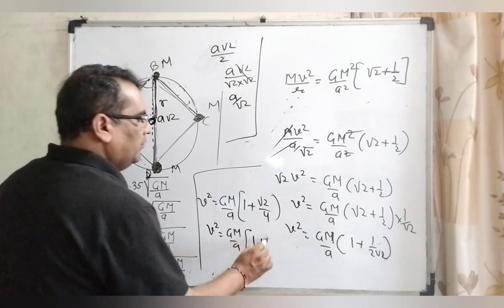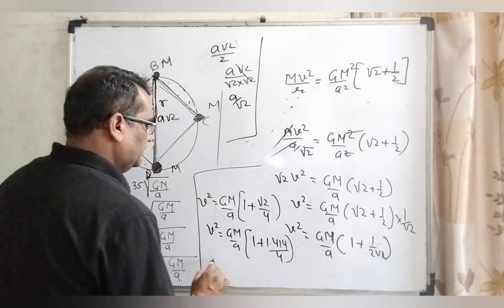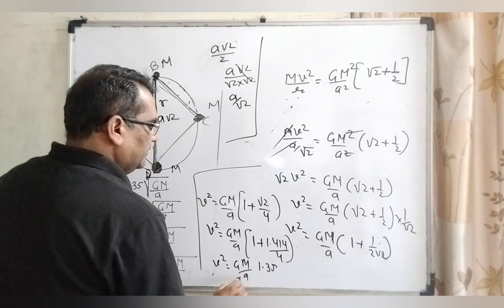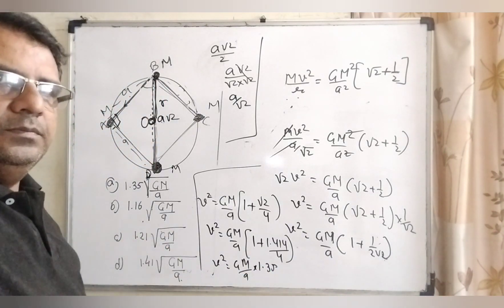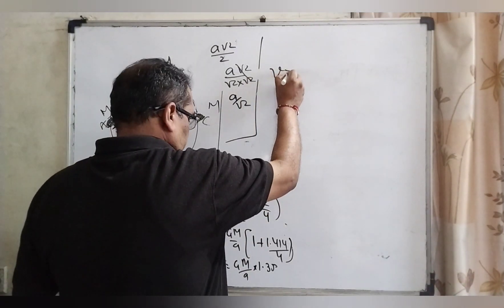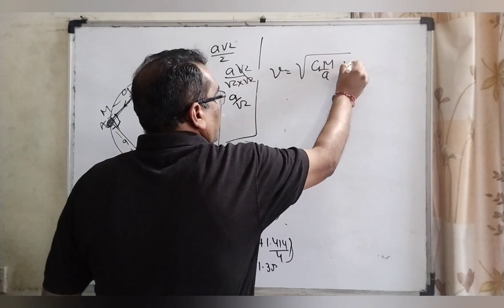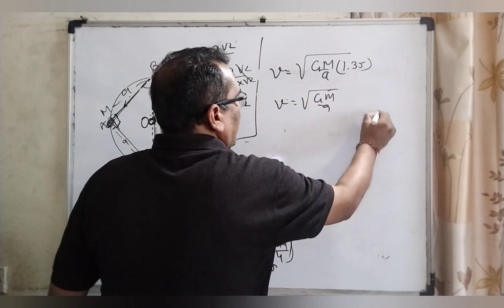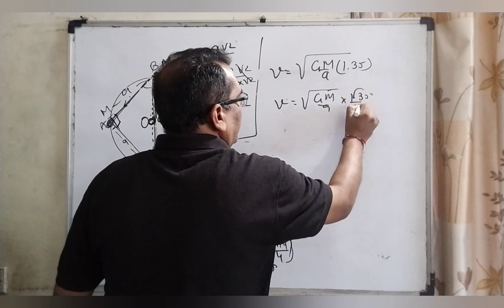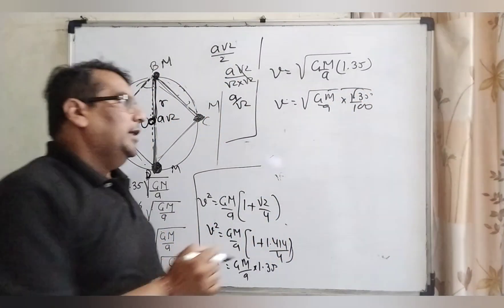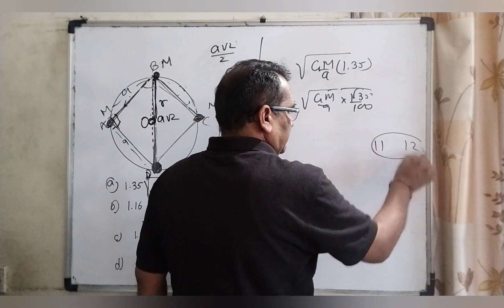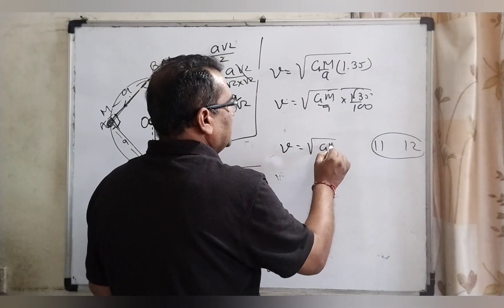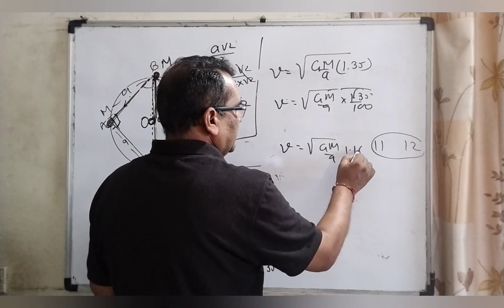What is the value of root 2? 1.414 divided by 4. Then V square equal to GM by A. So overall calculation 1.35 and getting the root, V equal to GM by A 1.35. So root GM by A and 1.35 and removing the decimal 135 by 100. You know that its root is between 11 and 12. 11 square is 121 and 12 is 144. So now we get its value is approximately 1.16.